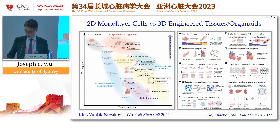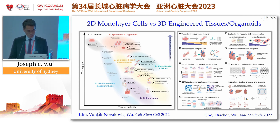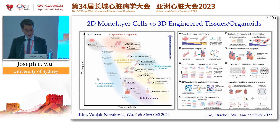In terms of deciding whether you want to work with 2D versus 3D iPS cells or derivatives, I put down two review articles that we've written in which we highlight some of the advantages and drawbacks of working with 2D versus 3D. For example, shown here on the left, it's very simple — with 2D, you're going to have increased throughput but decreased maturation.